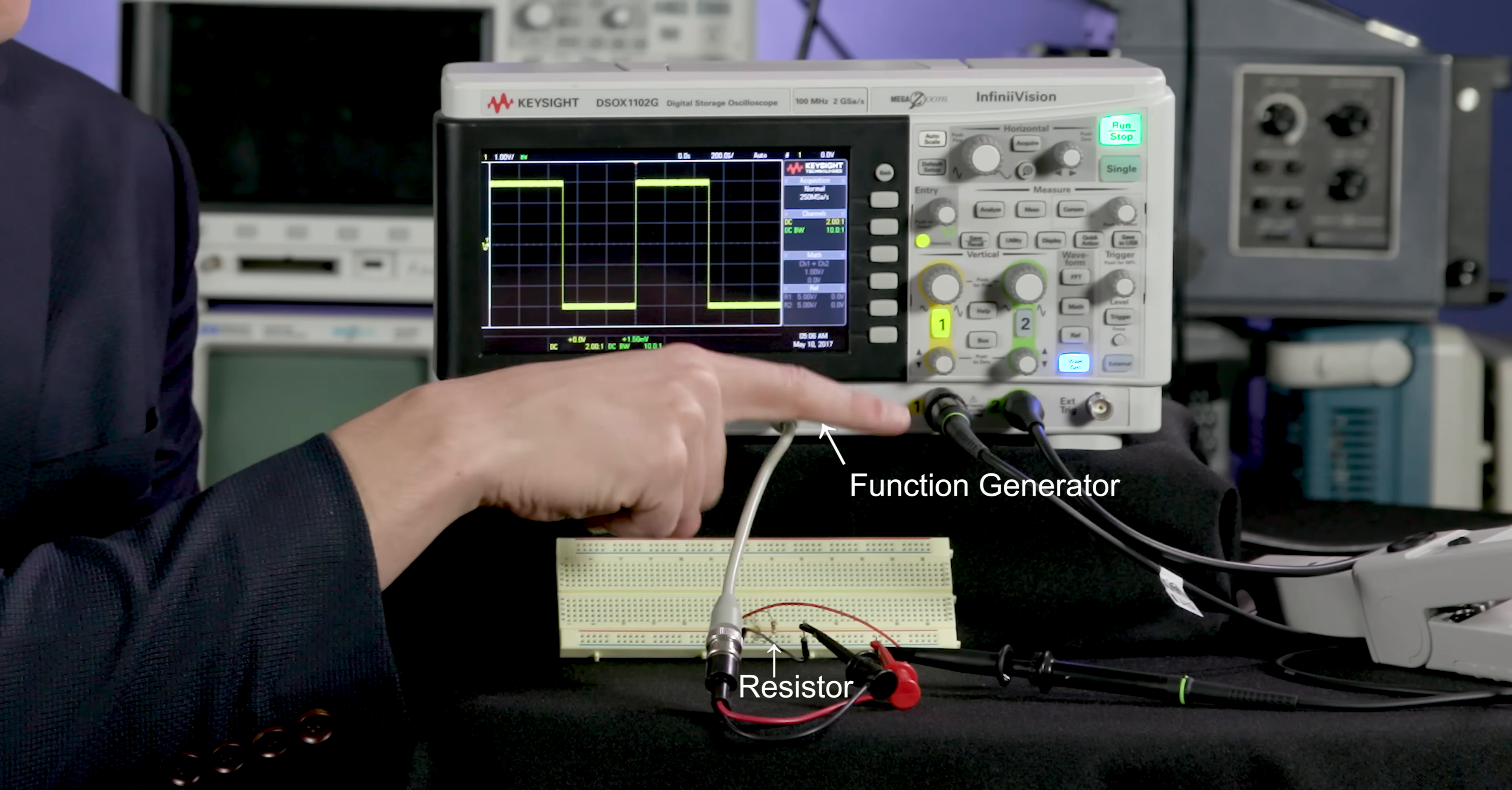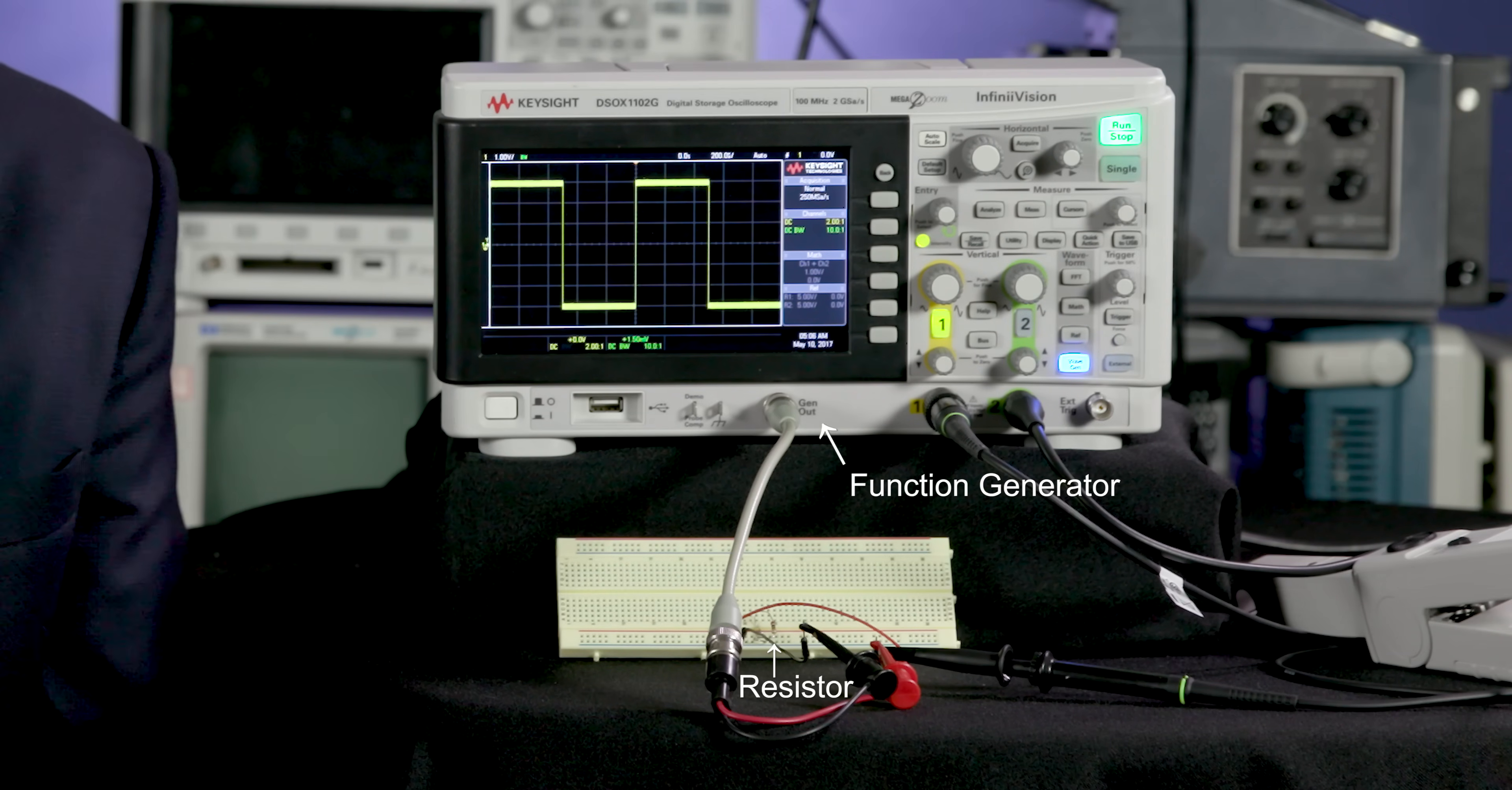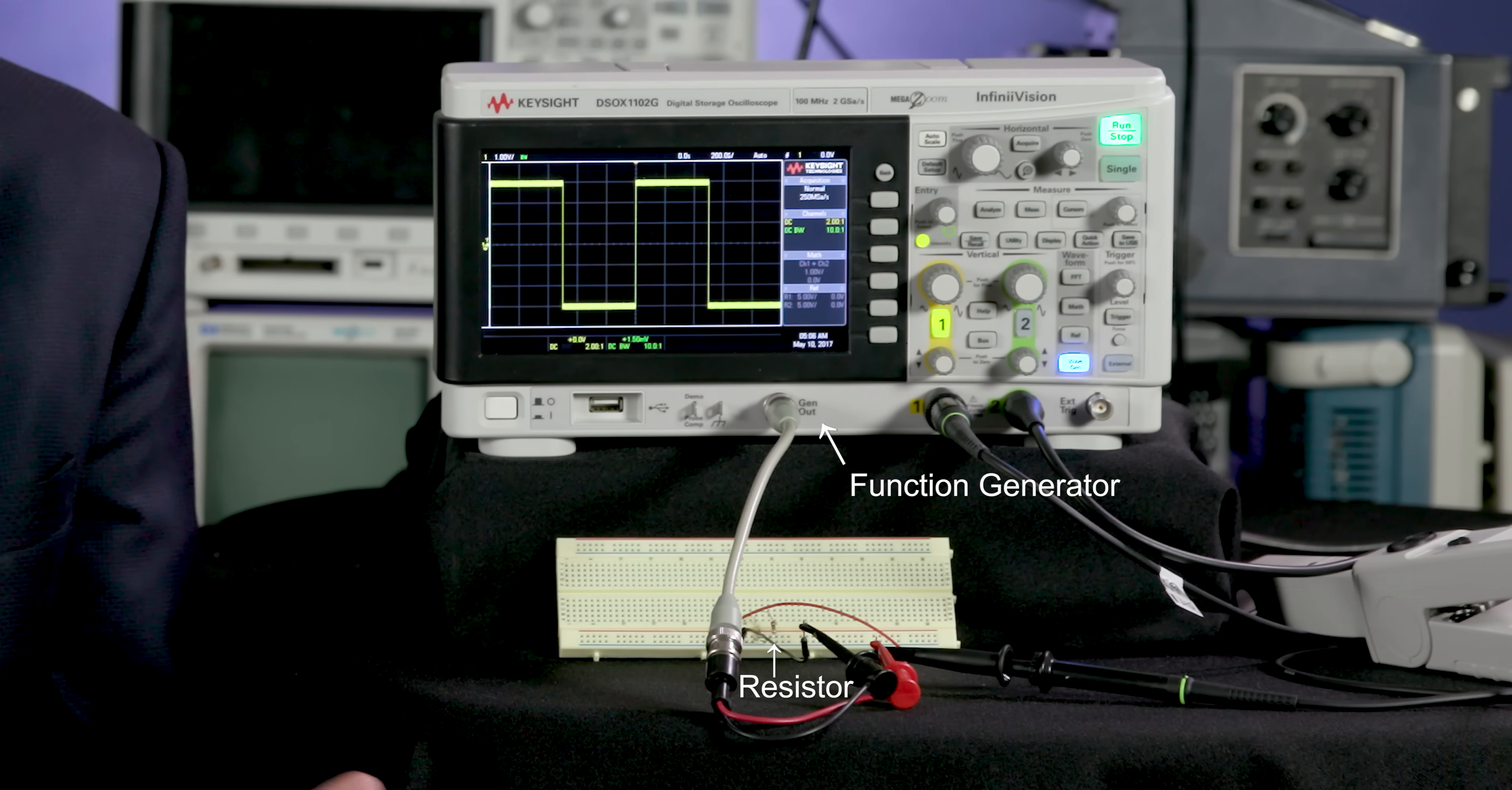Our circuit setup today is super simple. We have the wavegen from my oscilloscope running through a resistor and that's probed with channel one, and then we're going to put a capacitor in parallel with that resistor to see what happens.